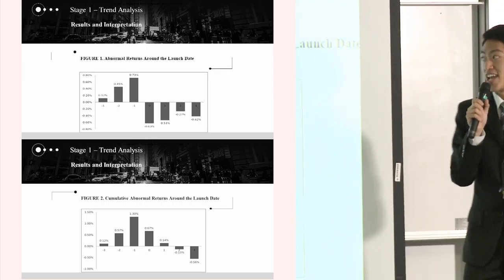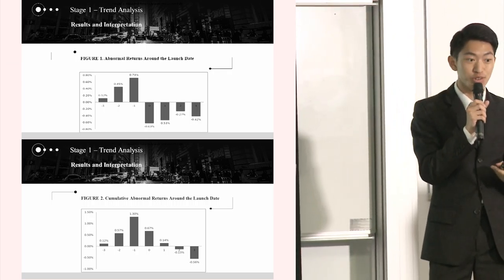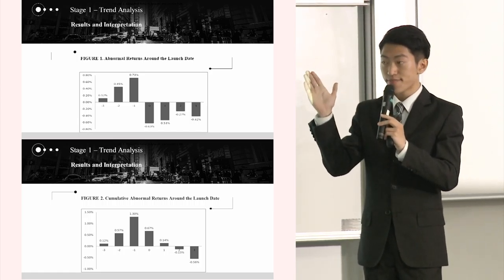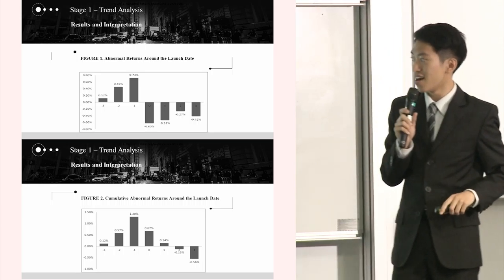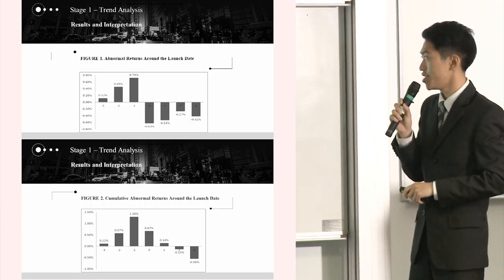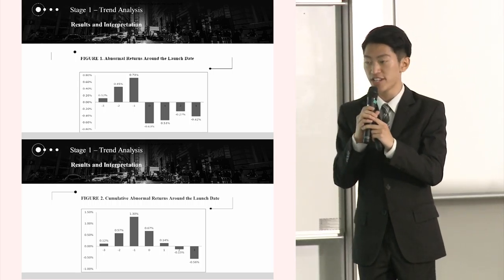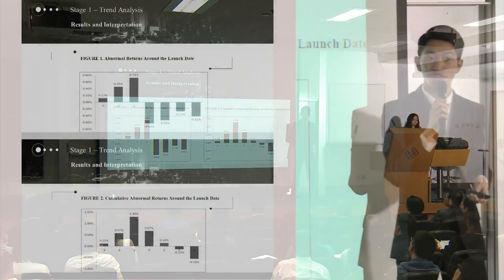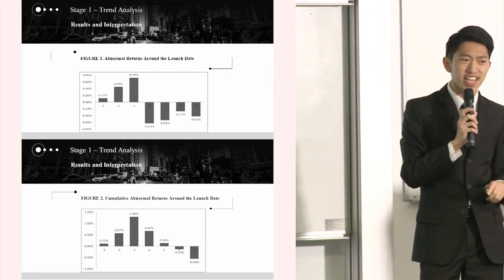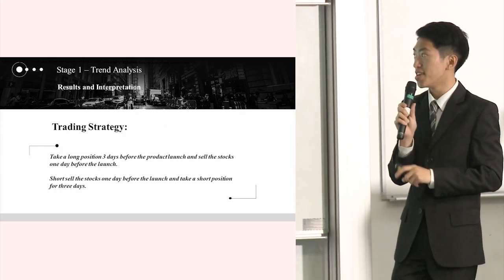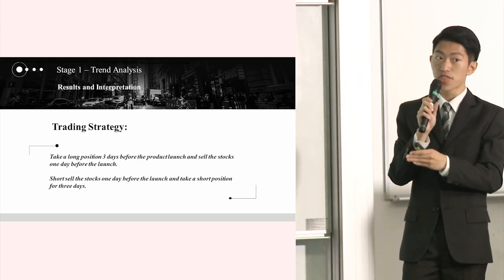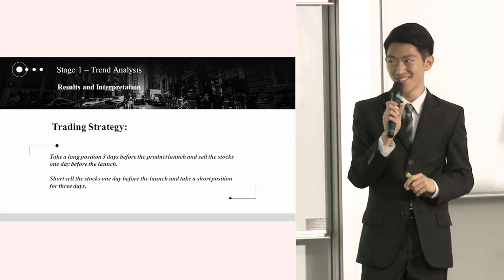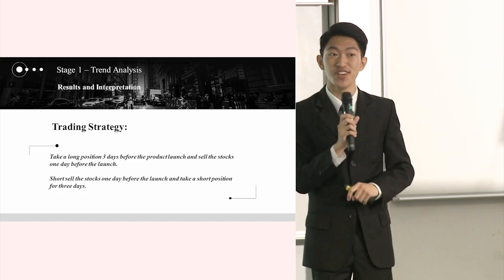We further summarized this data into a graph so that it's more straightforward to understand this pattern. For the abnormal return, it increased sharply before the new product launch and then drops on the product launch day. For the cumulative abnormal returns, it shares the same pattern and reaches its highest point just one day before the new product launch. Based on this interesting pattern, we recommend a trading strategy: take a long position three days before the new product launch and sell all stocks just one day before the launch.